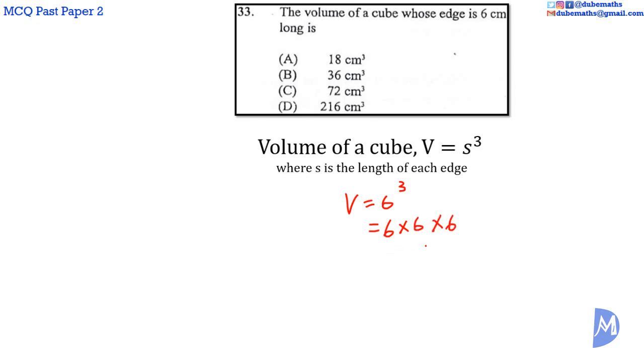6 multiplied by 6 is 36, and 36 multiplied by 6 is equal to 216. The answer is 216 centimeters cubed, which is D.